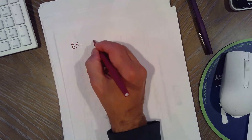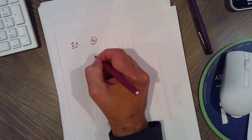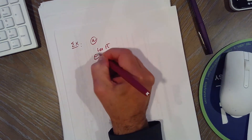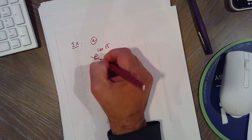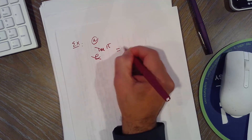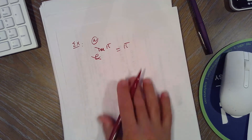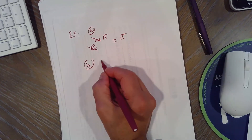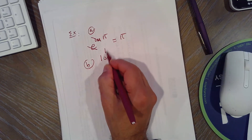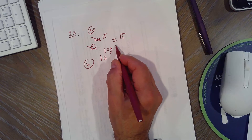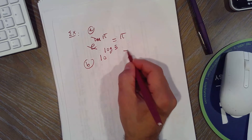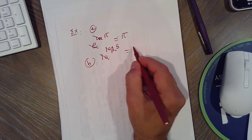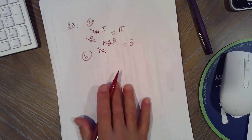Another comment: how do we evaluate e to the ln of π? E and ln have the same base, so they cancel out and give π. Part B: 10 to the log of 5 — 10 and log base 10 cancel each other out, giving 5.